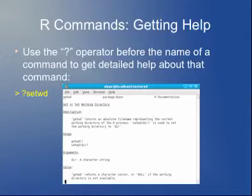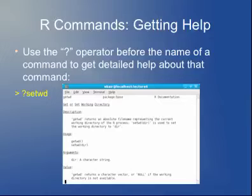To get help in R, if you can't remember how to use a particular command, you can get documentation for it by typing a question mark followed by the name of the command. So if you can't remember how the setwd command works, you type question mark setwd at the command line and it will bring up help telling you how to use that particular command. Even now, I use this all the time — if I can't remember what the parameters are for a particular function.